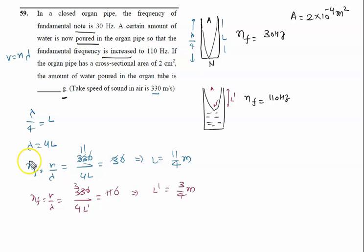The length of the water column X can be written as L minus L': 11/4 minus 3/4, which equals 8/4 or 2 meters.